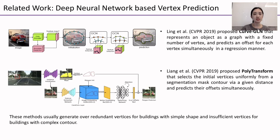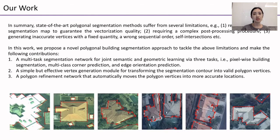In summary, state-of-the-art polygonal segmentation methods suffer from several limitations, such as relying on a perfect segmentation map to guarantee the vectorization quality, requiring a complex post-processing procedure, and generating inaccurate vertices with a fixed quantity, wrong sequential order, and self-intersections.